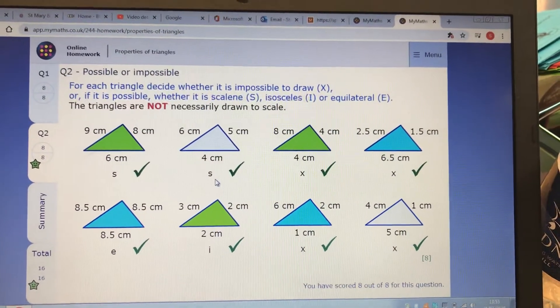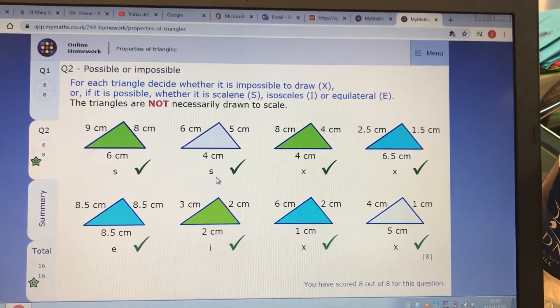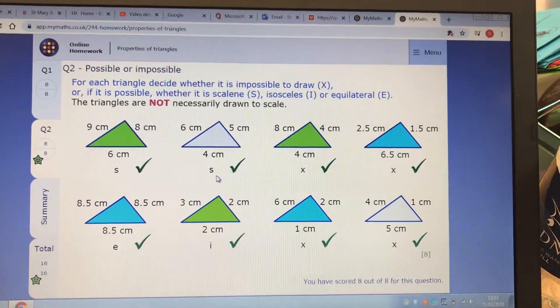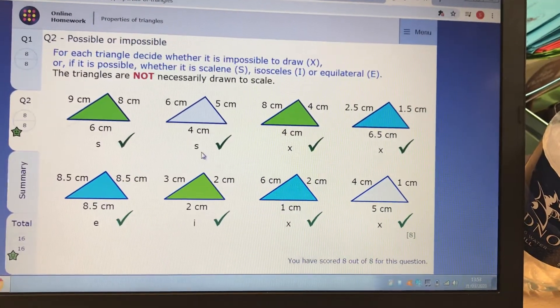So remember, if the two shorter sides are not bigger than the biggest length when they're added together, the triangle is not possible. Give it a go. Go back to the lesson if you would like to, and have a go at the topic again. Good luck.